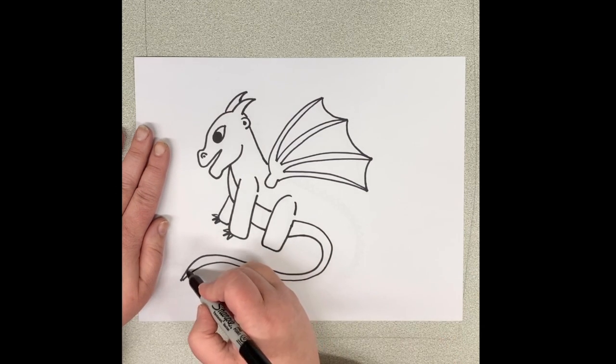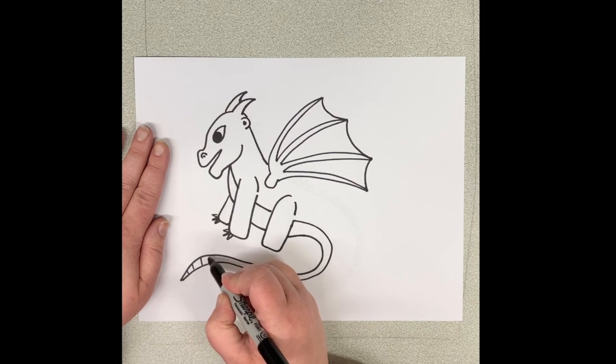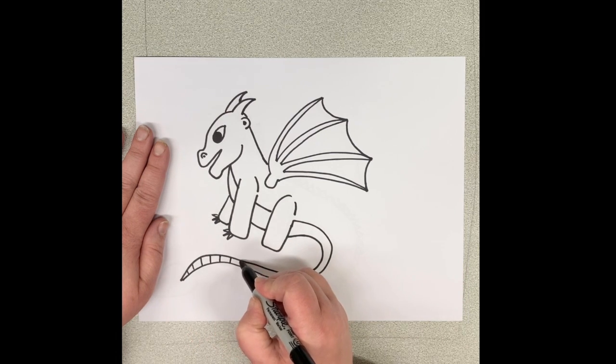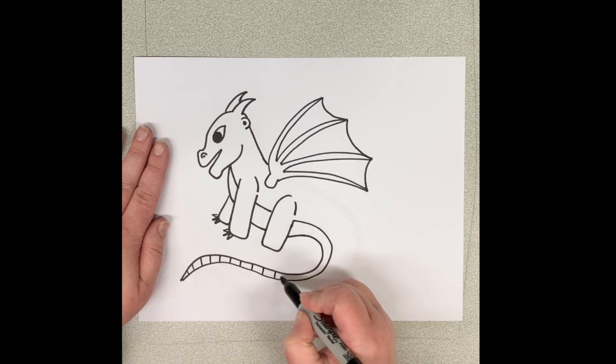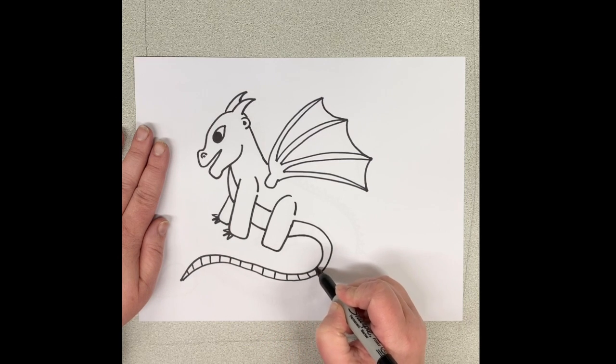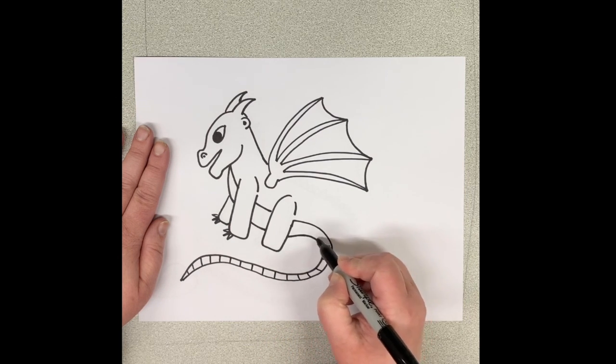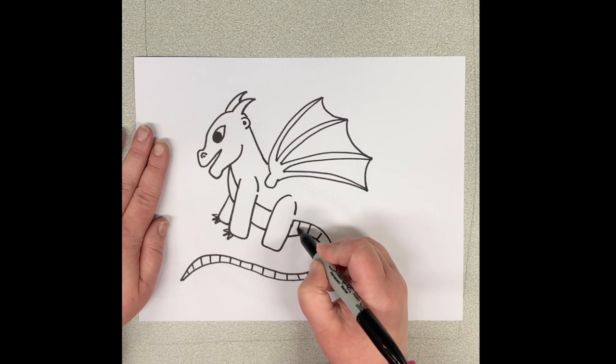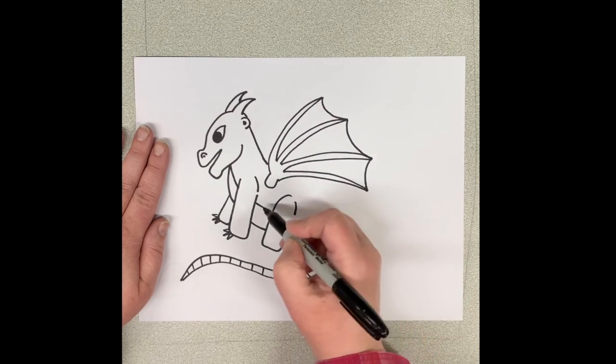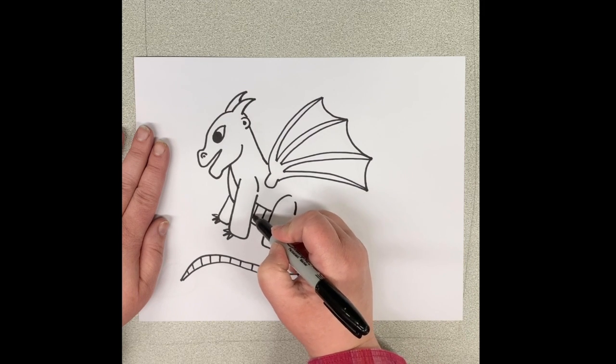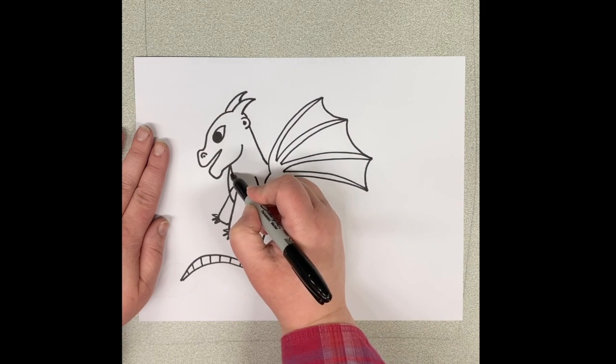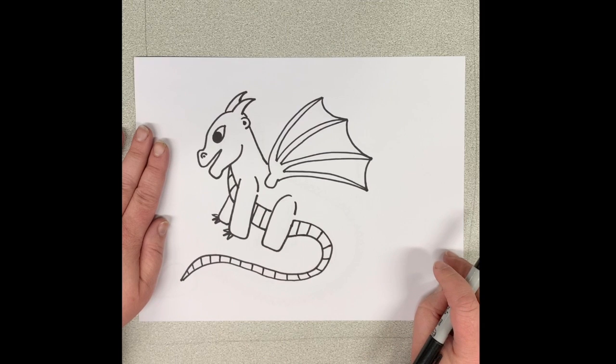And then we're going to add some lines on it to make them like the scales on the bottom of his tummy. So as we put our lines in, you don't have to go quite as quickly as I am. But I want you to notice how the lines turn. Every time there's a curve in the body, the lines kind of turn as well. So they're not always straight up and down. Sometimes they're sideways.